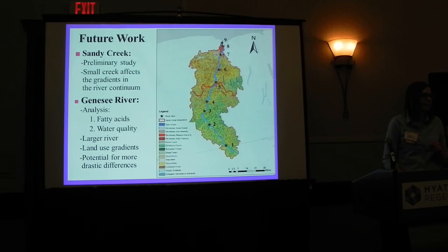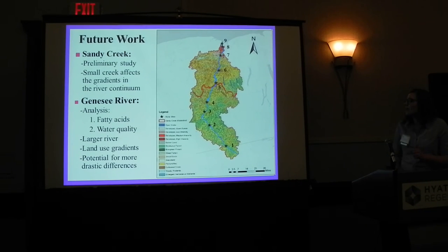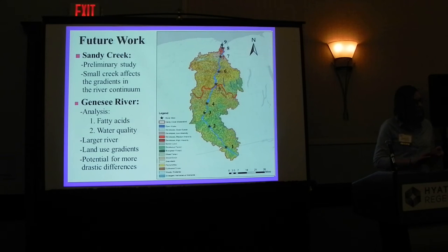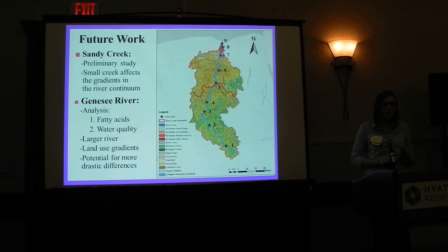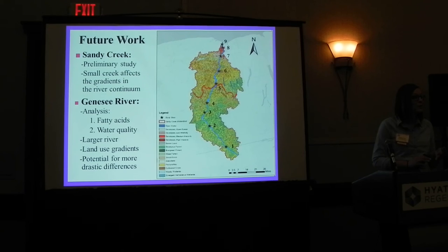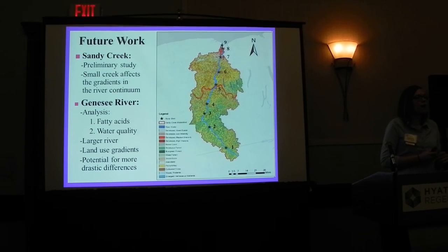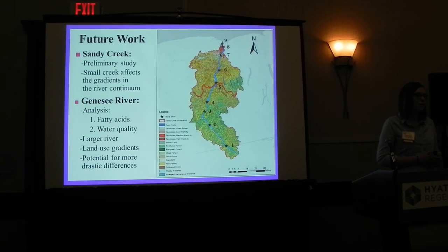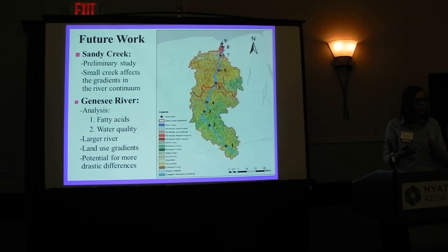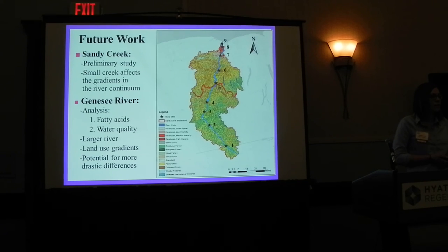Question: What species are you using in the Genesee? I have a long list — I'm looking at largemouth and smallmouth bass, a bunch of red horse sucker species, pumpkinseed and bluegill, and metallic suckers. So I'm looking at a larger range of species, trying to get some prey species and also some predator species as well, since I stuck with mostly prey species in the small Sandy Creek study.